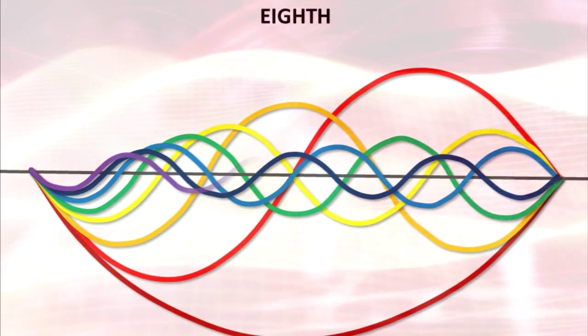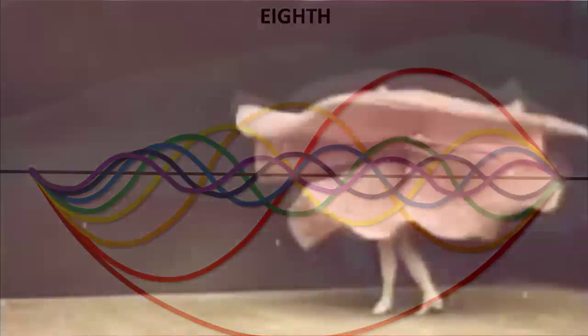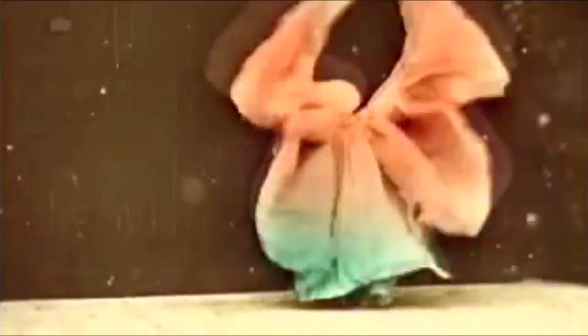The concept known as the Fourier harmonic series is one that we use to measure waves upon the ocean, currents of air, and harmonics in music and color.